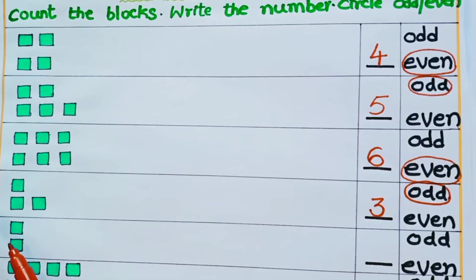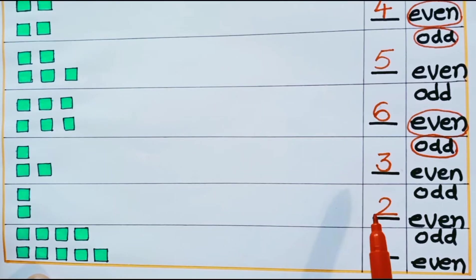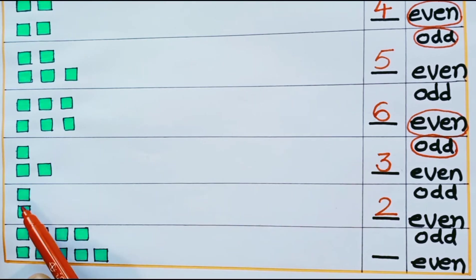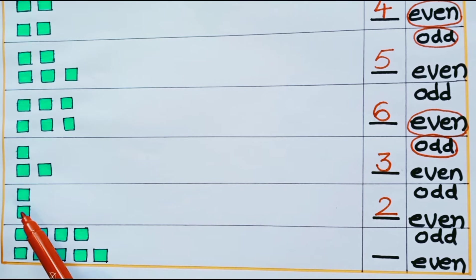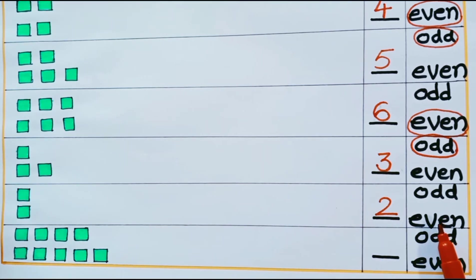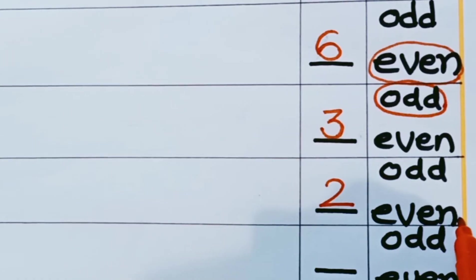Children look at the next row. How many blocks are there? 1, 2 — only 2 blocks. Is 2 an odd number or even number? It is an even number, because here we have 1 pair of blocks and there is no unpaired block. So 2 is an even number. Let us circle even.